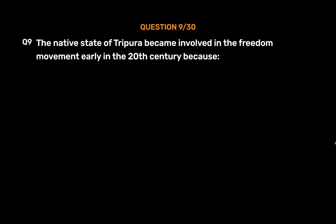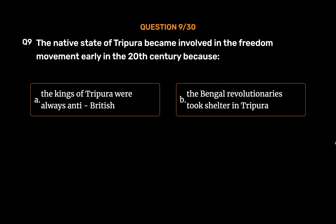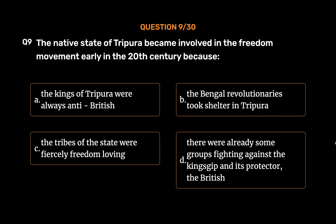Question No. 9. The native state of Tripura became involved in the freedom movement early in the 20th century because: Option A: The kings of Tripura were always anti-British. Option B: The Bengal revolutionaries took shelter in Tripura. Option C: The tribes of the state were fiercely freedom-loving. Option D: There were already some groups fighting against the king's regime and its protector, the British. The correct answer is Option D.